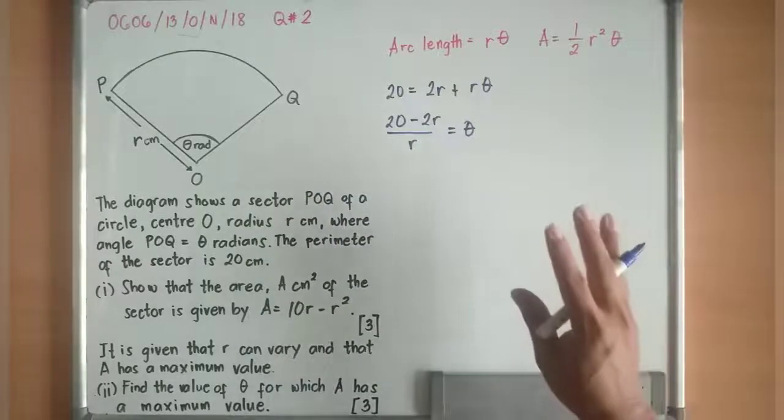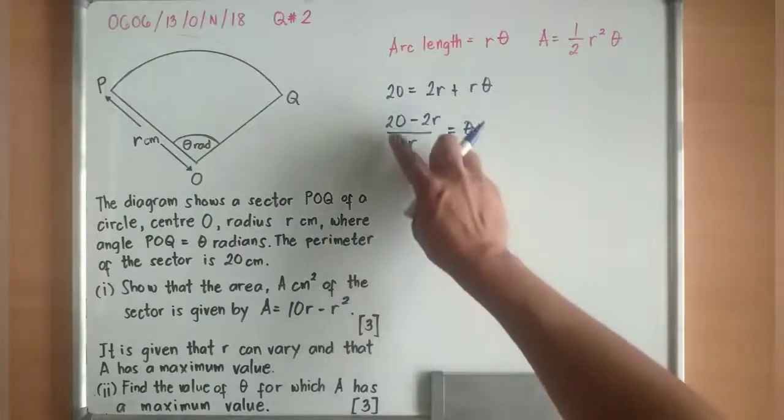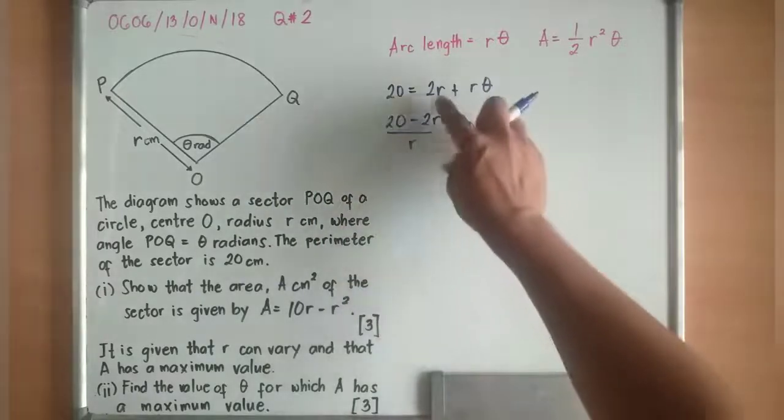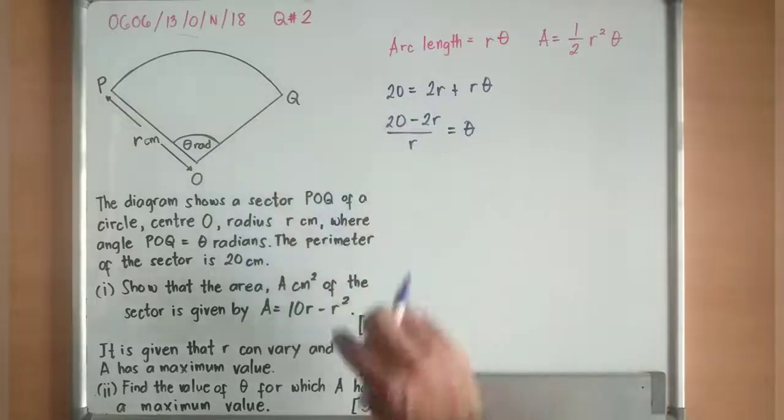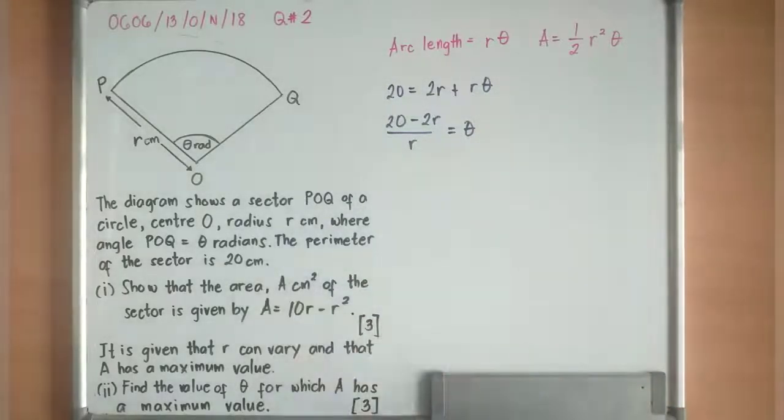It will now become 20 minus 2R divided by R equals theta. How did I get this? You subtract both sides by 2R, so it becomes 20 minus 2R, and then divide both sides by R to make theta the subject of the formula.